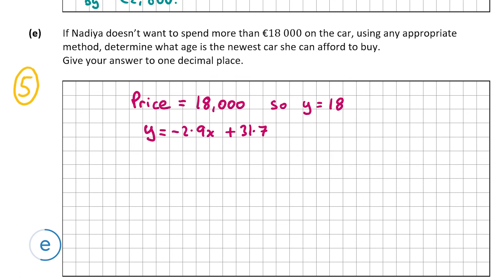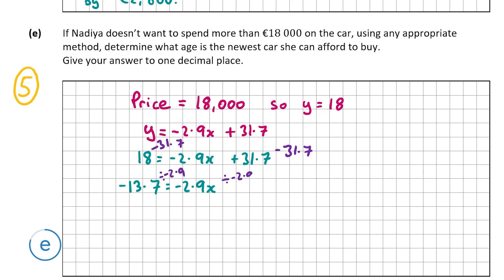Setting 18 = −2.9x + 31.7, subtract 31.7 from both sides to get −13.7 = −2.9x. Divide both sides by −2.9: x = −13.7 ÷ −2.9 = 4.724, which correct to one decimal place is 4.7 years. So the newest car Nadia can afford is approximately 4.7 years old. Thank you very much for watching, and I hope this helped.